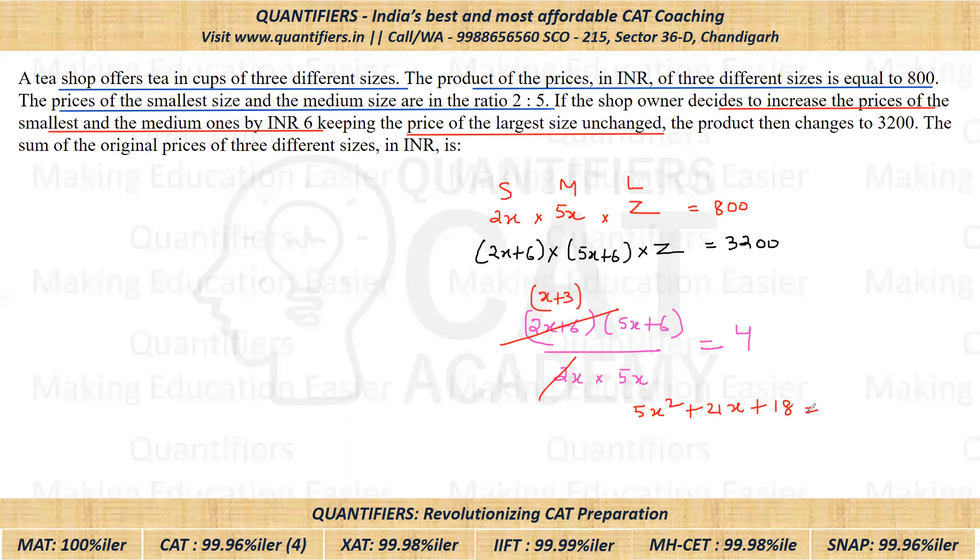This will be equal to 4 into x into 5x, so that is 20x square. From here we get 15x square minus 21x minus 18 equals 0. The complete equation we can take 3 common. So on taking 3 common, we will be left with 5x square minus 7x minus 6 equals 0.